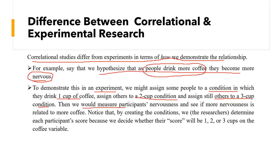We then measure the participant's nervousness and see if more nervousness is related to more coffee. Notice that in creating these conditions, we as researchers determine each participant's condition — we decide whether they get one, two, or three cups of coffee. So we assign the coffee to individuals; it is totally experimental research. We manipulate our independent variable, and manipulation is the important aspect of experimental research.